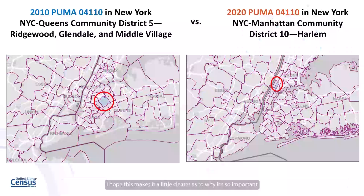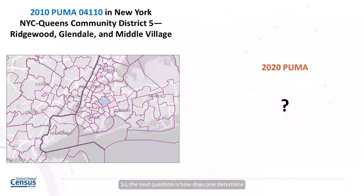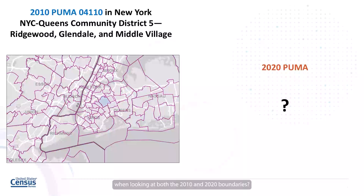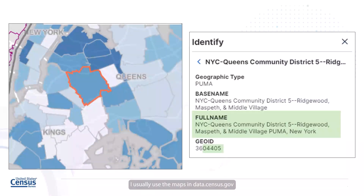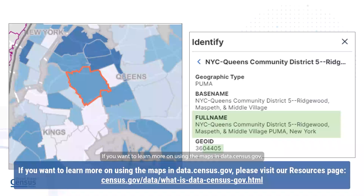I hope this makes it a little clearer as to why it's so important to confirm that you are actually using the PUMAs that you intend to use whenever you are working with them in this way. So the next question is, how does one determine what PUMA should be used when looking at both the 2010 and 2020 boundaries? Let's stick with trying to find the new GOID using the 2020 boundaries for PUMA 04110, named NYC Queens Community District 5, Ridgewood, Glendale, and Middle Village using the 2010 boundaries. I usually use the maps in data.census.gov to determine the information about the PUMA.